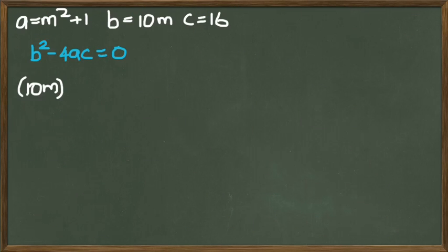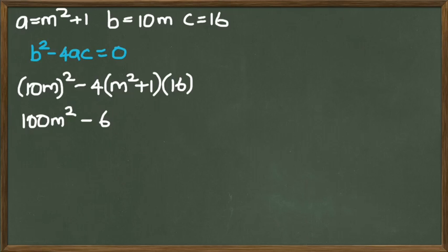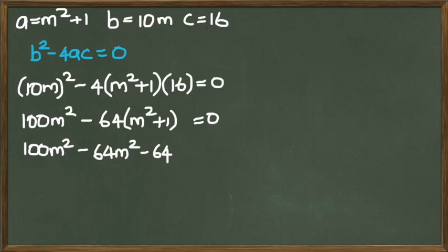So we have b squared, which is 10m squared minus 4 times a, which is going to be m squared plus 1, and c, which is 16. Expanding this, we're going to get 100m squared minus 64 times m squared plus 1. And of course, all this is equal to 0. I'll continue to simplify it further. We should end up with 36m squared equals 64, which means m squared is 64 over 36.